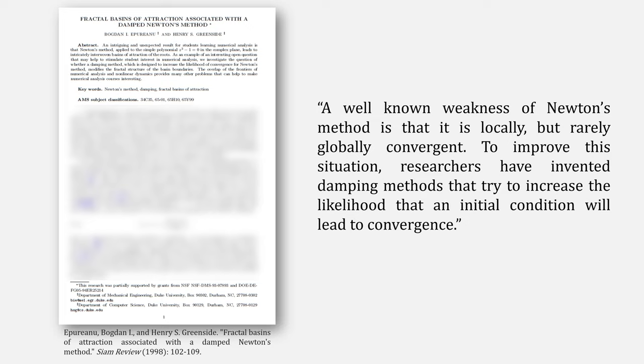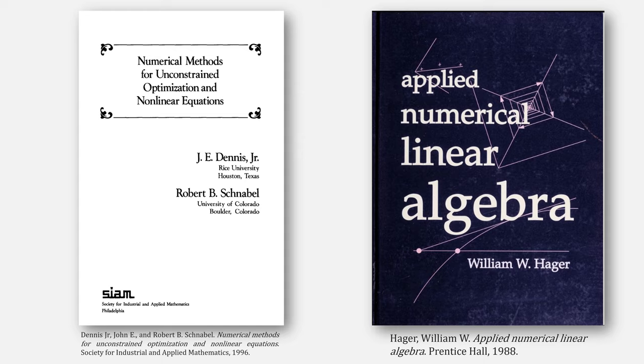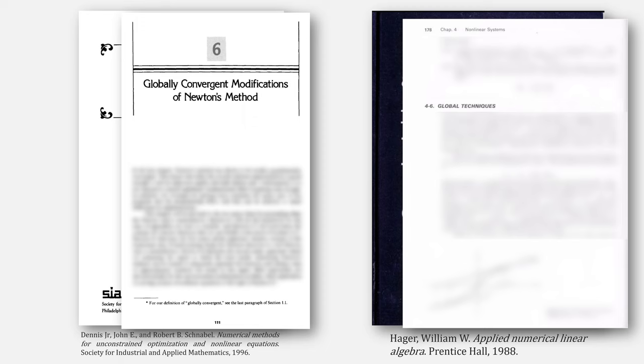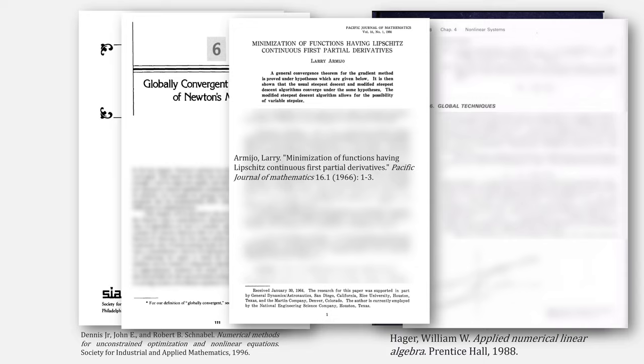The authors write, a well-known weakness of Newton's method is that it is locally but rarely globally convergent. To improve the situation, researchers have invented data methods that try to increase the likelihood that an initial condition will lead to convergence. They cite these two books, one by Dennis Jr. and Schnabel, and the other by Hager. Both include chapters on a globally convergent Newton method, citing the same paper. This one by Armijo.